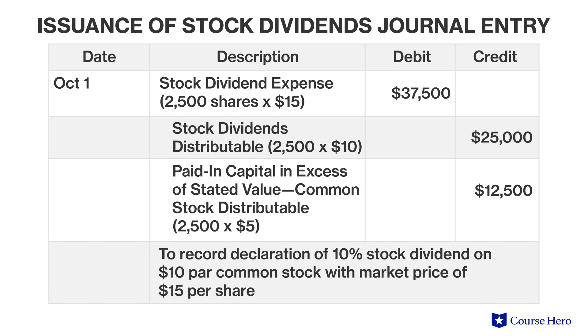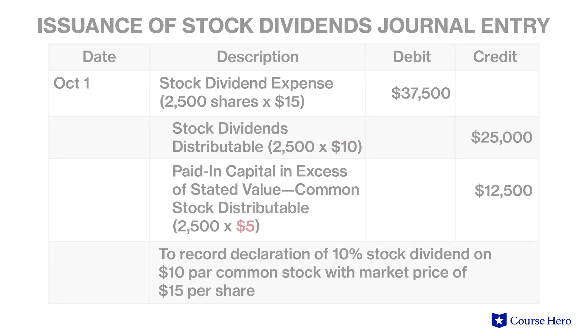Note that the dividend expense is the value of each share, fifteen dollars, times the number of new shares to be issued. However, the liability is being divided in two parts: the first ten dollars for the par amount and the remaining five dollars for the amount in excess of par. This is essentially the same way the new shares will be recorded in the equity section of the balance sheet once the dividend is paid.